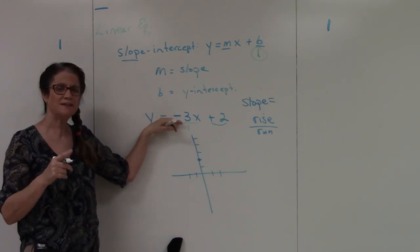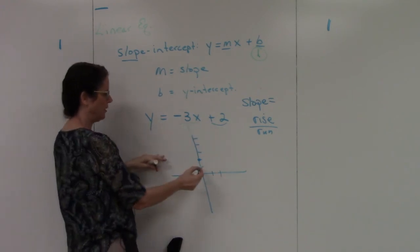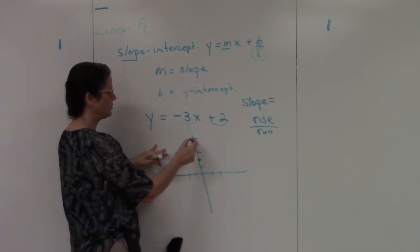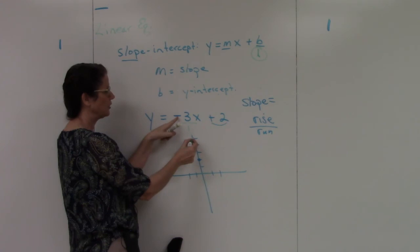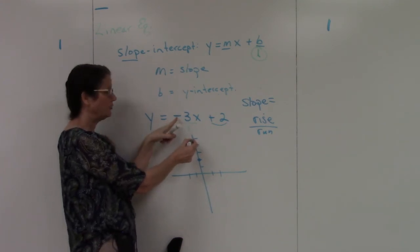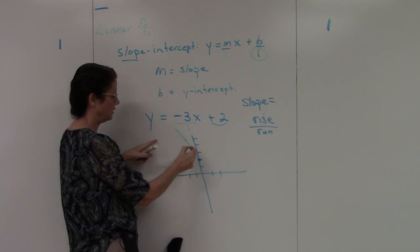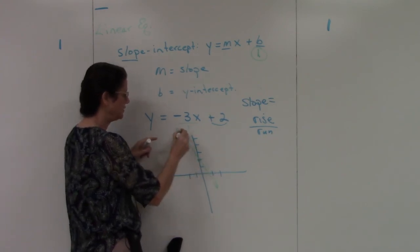So notice I'm always rising. I'm never going down. I'm always going to rise. So from my positive 2, I'm going to rise 3. But now, I'm going to run in the negative direction. So I automatically go to the negative side because my slope is negative. So I rise 3, run 1, and there's my line. And that really is it.